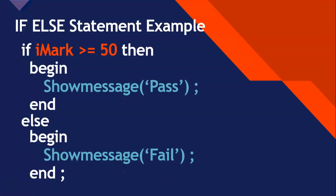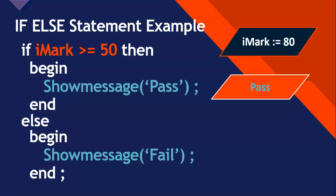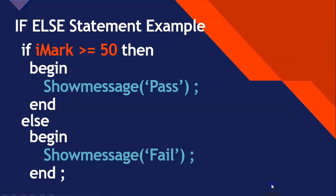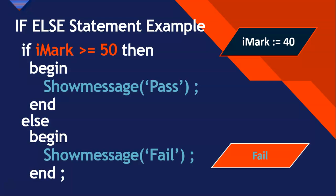Let's look at the if-else example. If mark is 80, then mark is greater than 50 is true, so it will display pass and jump out of the if statement without executing the else part. If mark is 40, the condition is false, so it will skip the show message pass and jump straight to the else part, display fail, then jump out of the if statement and continue. That is how an if statement works.